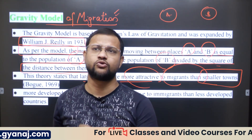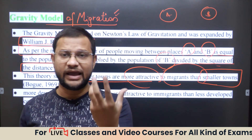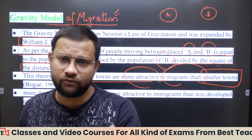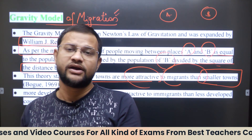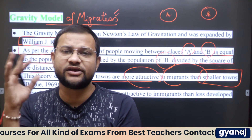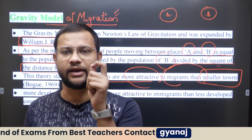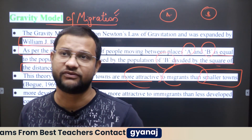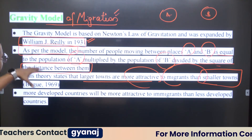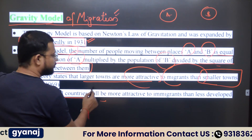The volume of migration goes on increasing. For example, take Delhi — because it already has a significant amount of population, it is a destination for hundreds of millions of individuals who enter Delhi every year, every decade. Similarly, more developed countries will be more attractive to immigrants than less developed countries.